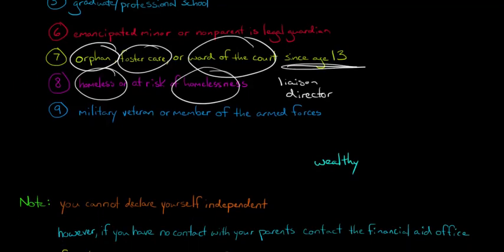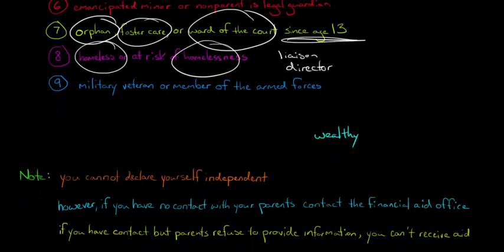However, that being said, if you can show that you have absolutely no contact with your parents, if you don't, if you just don't even know where your parents are, then you should contact the financial aid office at your school and explain the situation and see about how they want you to follow the FAFSA and how to proceed.